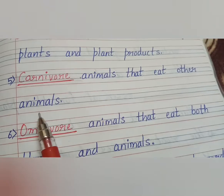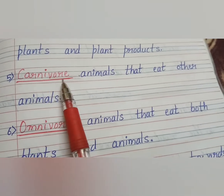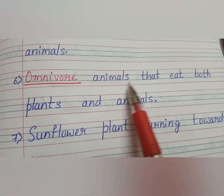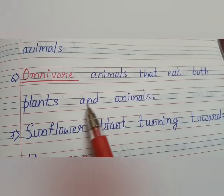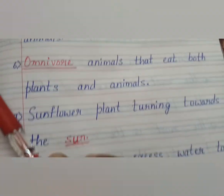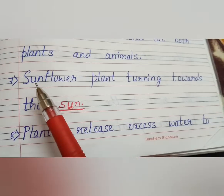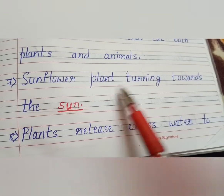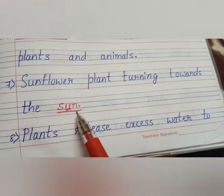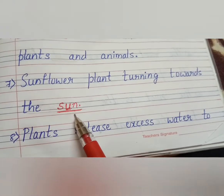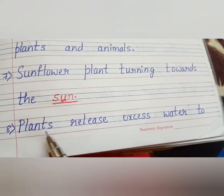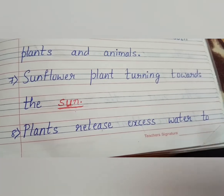Fifth question: dash animals that eat other animals — answer is carnivore. Next: dash animals that eat both plants and animals — answer is omnivore. Next question: sunflower plant turning towards the dash — answer is sun.